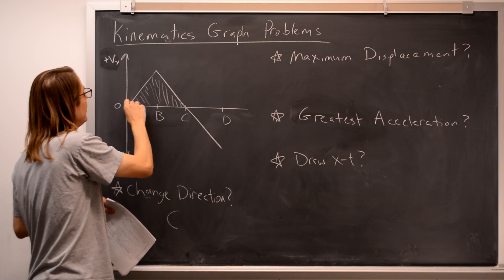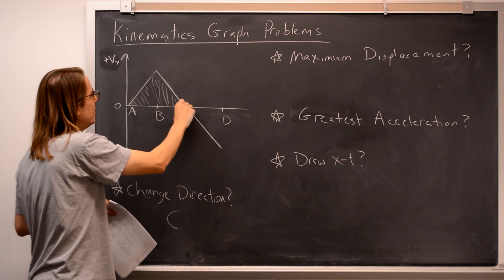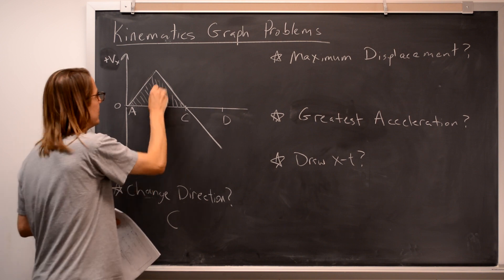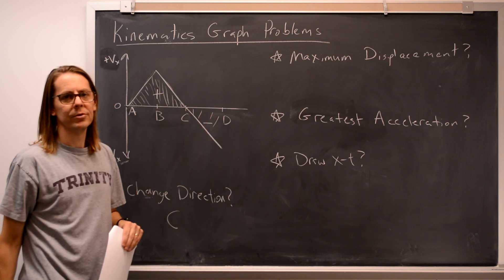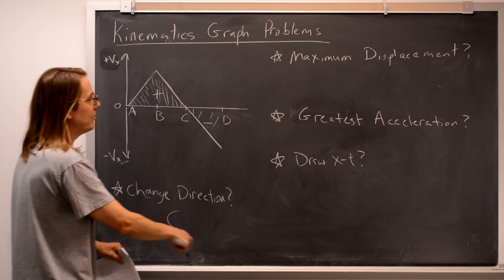So the displacement starts to get smaller once you get past here. So really the biggest positive area under the curve you have is at C, because this is all positive. If we start to put these in, those are negative contributions. So, same thing, C.